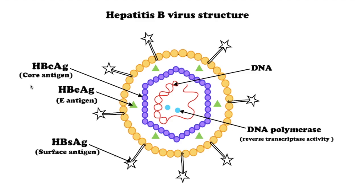Hepatitis B virus antigens and their meanings. HBsAg is found on the surface of HBV and indicates hepatitis B infection. It is the first serologic marker to appear in a new acute infection. A person who spontaneously recovers will test negative for HBsAg and negative for HBV DNA approximately four months after the appearance of symptoms.